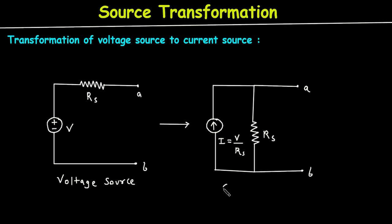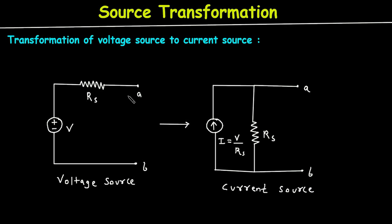This is the current source. This is how we can transform a voltage source into its equivalent current source.